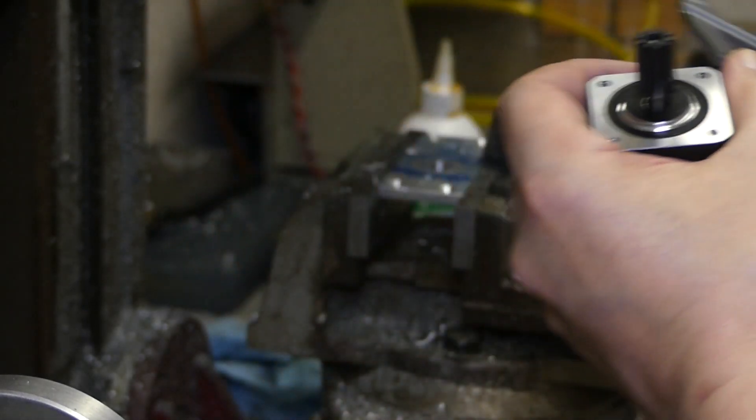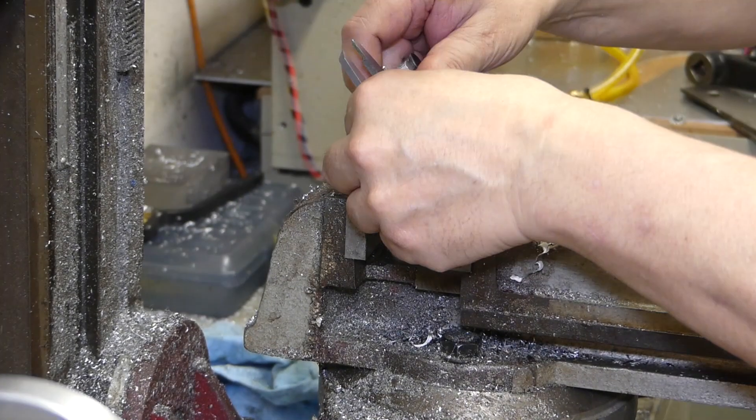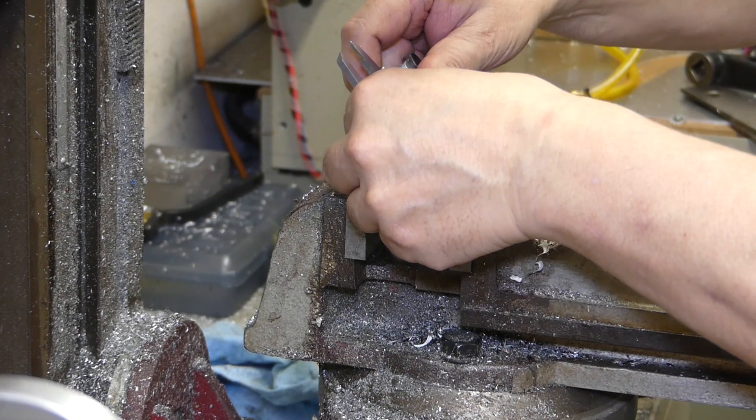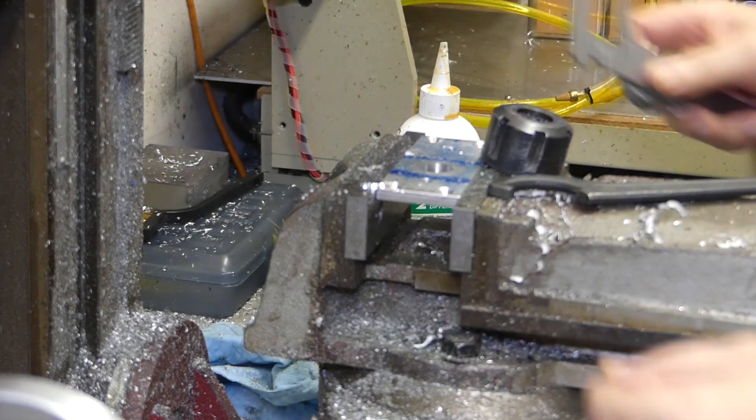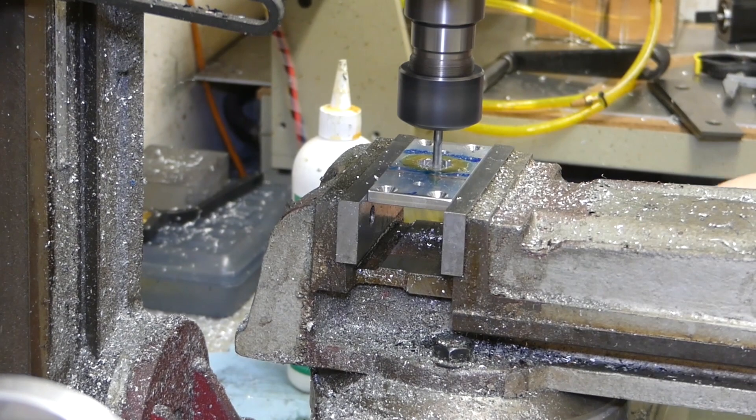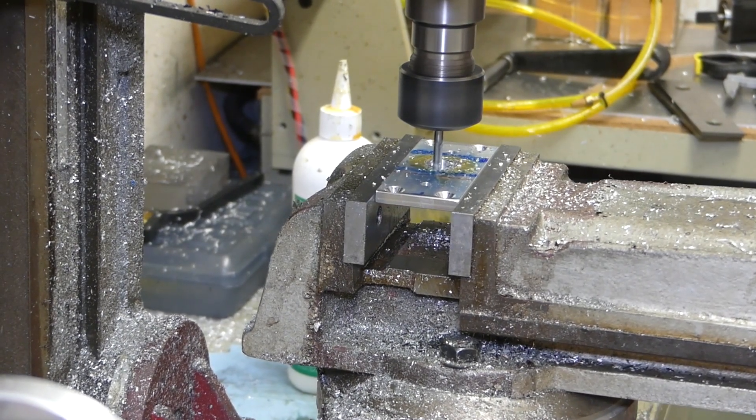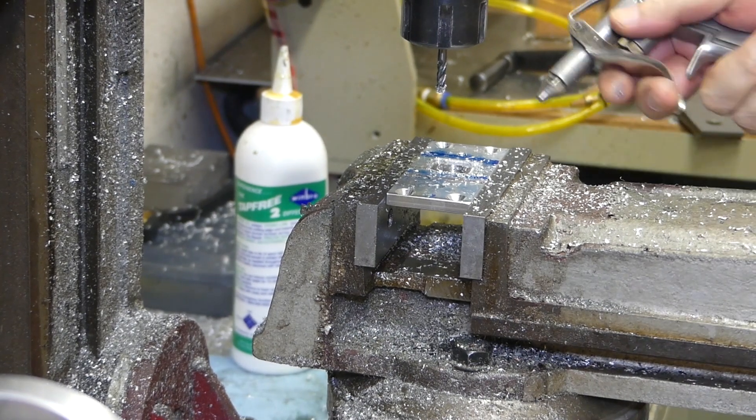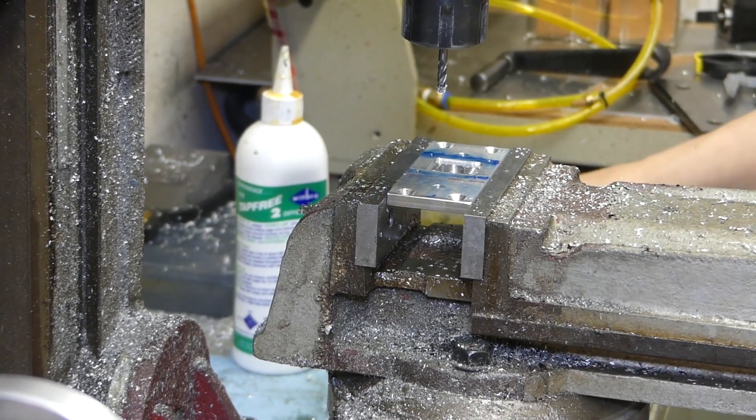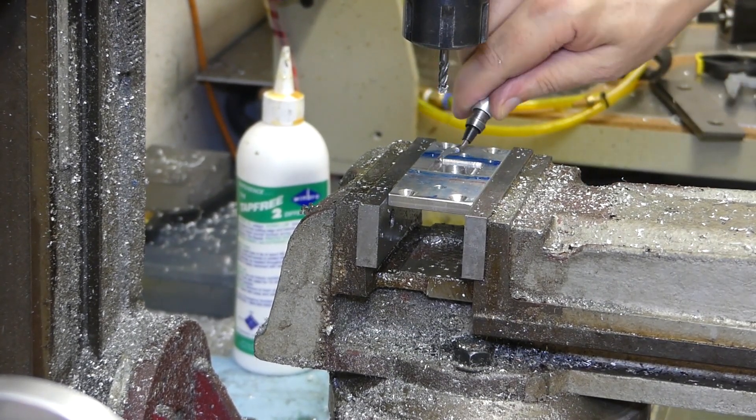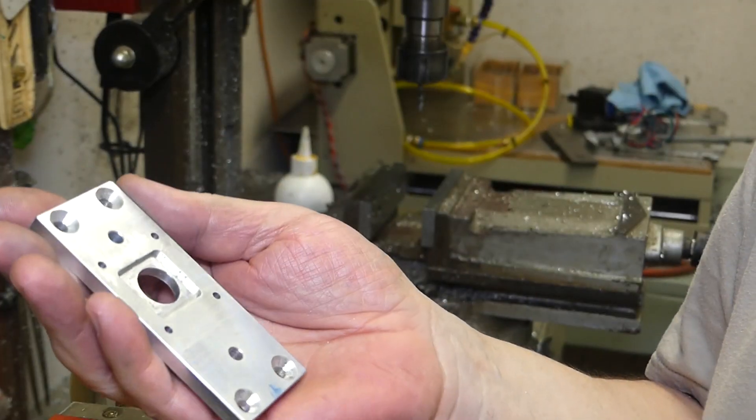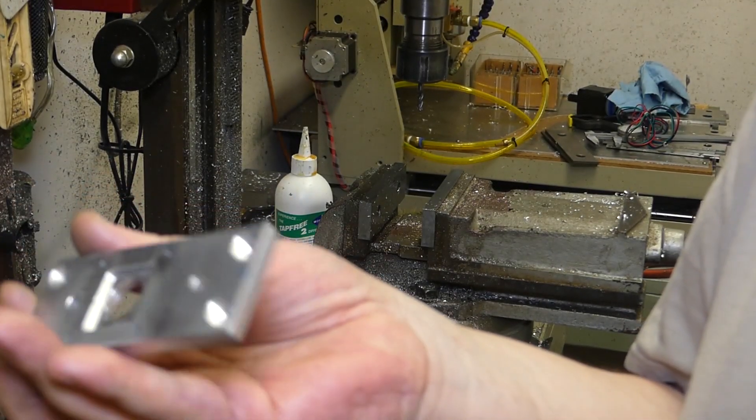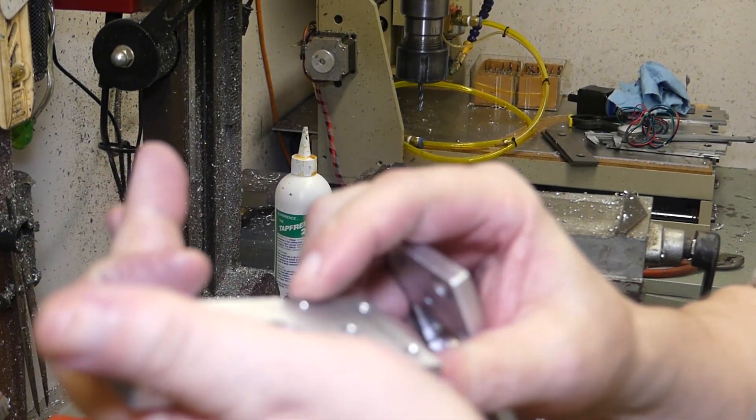NEMA 17 motors also have a small step up around the shaft, as you can see, versus the mounting area. I am milling out a pocket for this section. And of course, all of this needs to be done for both bridges.